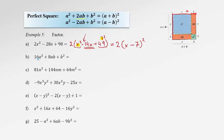In the next example, we have a trinomial where the first term is a perfect square of b and the last term is a perfect square of 4a. We check if the middle term is double the product of 4a and b: 4a times b is 4ab, doubled is 8ab — yes it is. Therefore, we fold the whole trinomial to the perfect square of the sum, taking the middle sign: (4a plus b) squared.